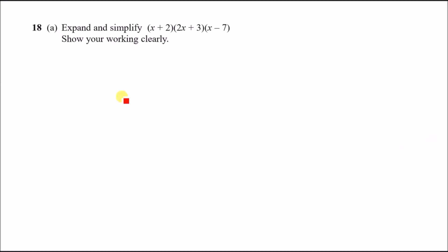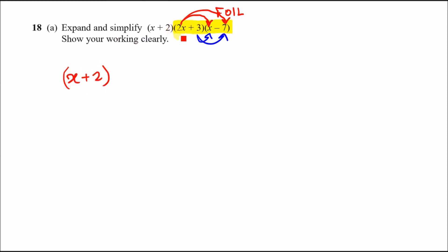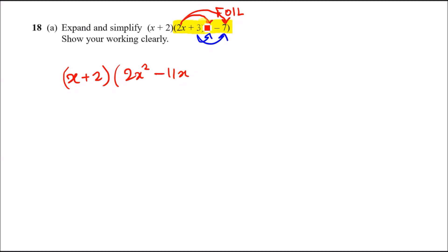Number 18: expand and simplify the triple bracket. For triple bracket problems, always expand the last two brackets first using the FOIL method. FOIL means multiply the first terms together, then outer, inner, last. So ignoring (x + 2) for now, expanding (2x + 3)(x − 7): 2x × x = 2x², 2x × −7 = −14x, 3 × x = +3x, combining: −14x + 3x = −11x, and 3 × −7 = −21. So we get 2x² − 11x − 21.